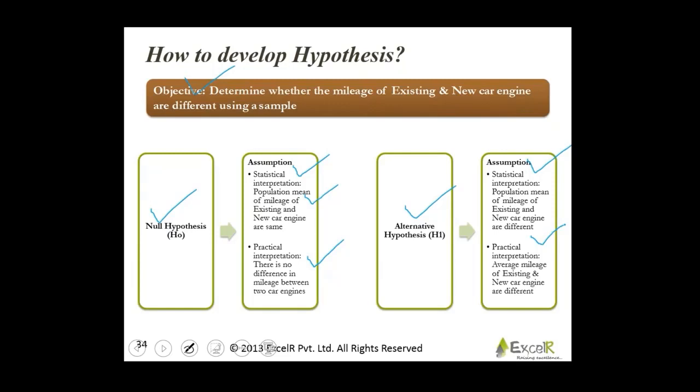Null hypothesis says mileage provided by both the car engines is the same. That means there is no difference between these two. And your alternate hypothesis says it is different. Null hypothesis says the mileage between the two car engines is the same. Alternate hypothesis says it is different. Same and different.